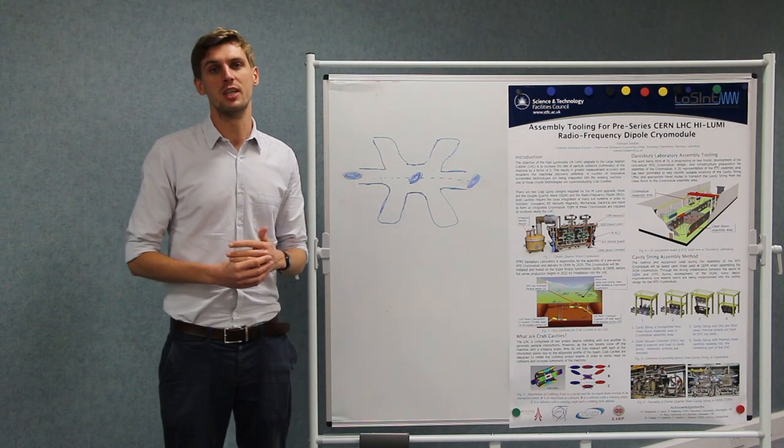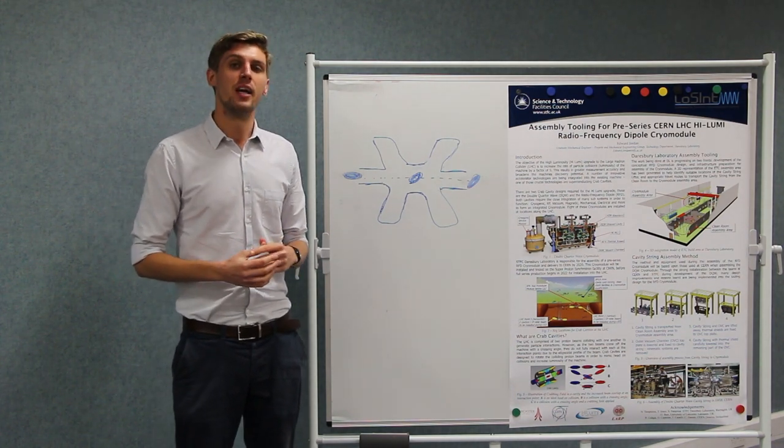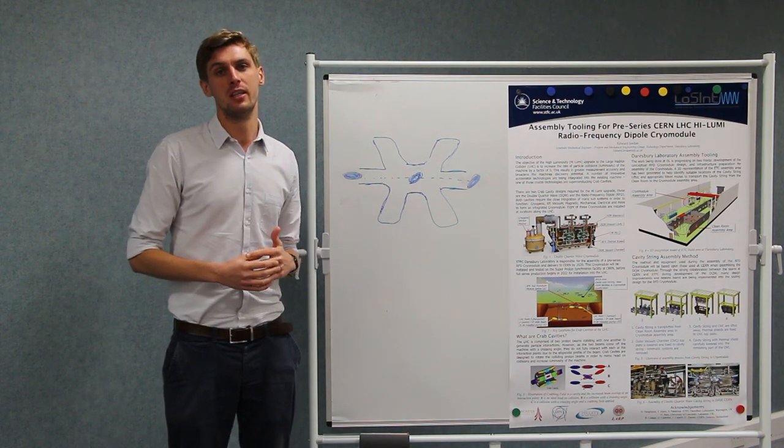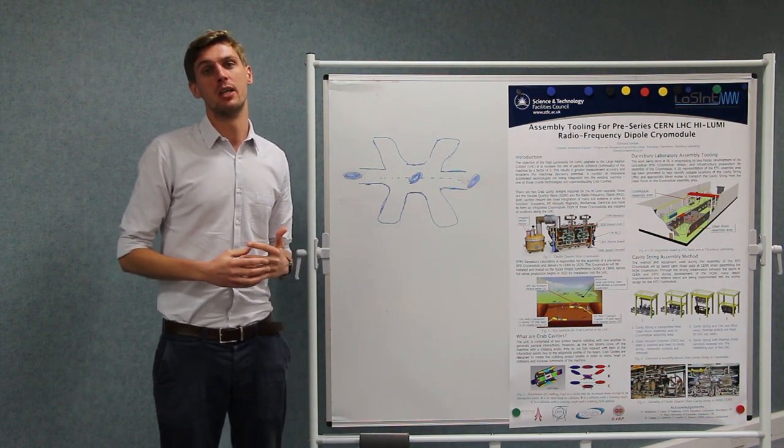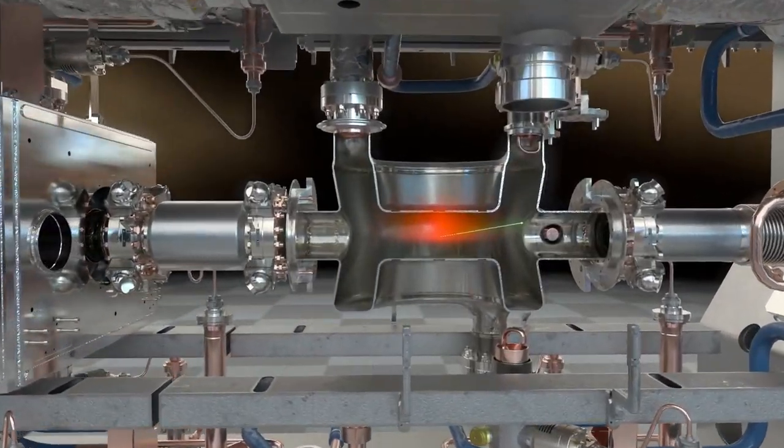Hello, I'm Nick Templeton and I'm a Project and Mechanical Engineer at Daresbury Laboratory. High Luminosity is a project to upgrade the LHC to its maximum discovery potential. We do this by increasing the rate of proton collisions using crab cavities.